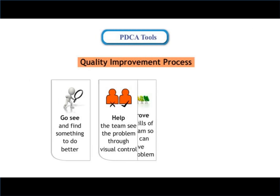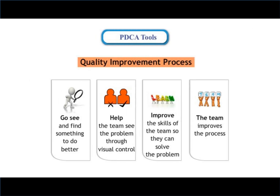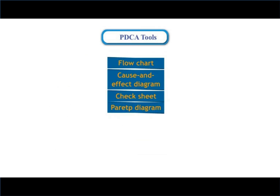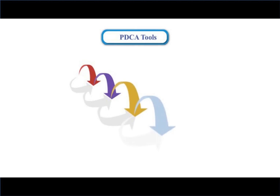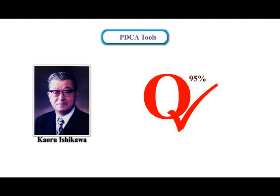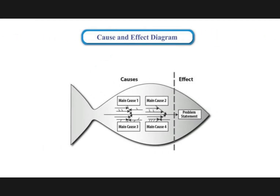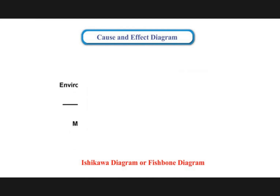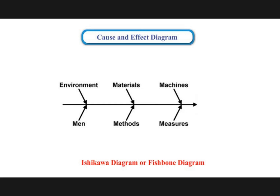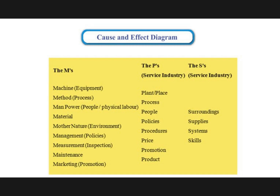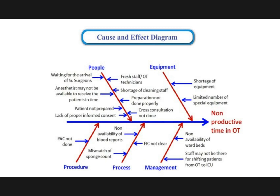Once the basic problem solving or quality improvement process is understood, the addition of quality tools can make the process proceed more quickly and systematically. According to Ishikawa, 95% of quality-related problems can be resolved with these basic tools. The cause and effect diagram, also referred to as the Ishikawa diagram or fishbone diagram, identifies many possible causes for an effect or problem. The common categories in a fishbone diagram are the M's, the P's, and the S's.